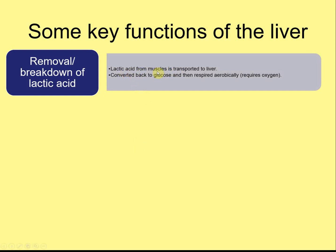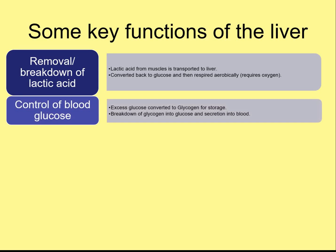Lactic acid is transported to the liver from the muscles, converted back into glucose, and can be respired aerobically. Remember that whole process requires oxygen — that's you paying off your oxygen debt. If there's too much glucose and it's not going to be used, it will be converted into glycogen to control your blood glucose. So excess glucose, either from lactic acid or from excess glucose absorbed from your digestive system, will be converted to glycogen and stored. Glycogen is a storage polysaccharide like starch, and that is controlled by hormones. Insulin, for example, will tell the liver to take more glucose out of your blood and store it as glycogen. But equally, if you're doing lots of exercise or haven't eaten for a while and your blood glucose level is falling, that glycogen store can be broken back down into glucose and secreted into the blood — that's another metabolic process. Breakdown of glycogen into glucose is one of those breakdown reactions.